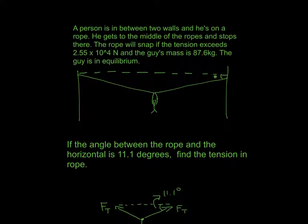So in this problem, we have all this information and then the actual question, which is if the angle between the rope and the horizontal is 11.1 degrees, find the tension in the rope.